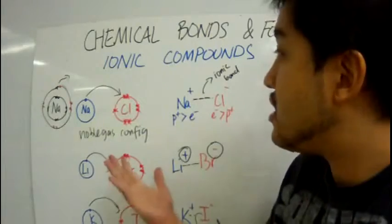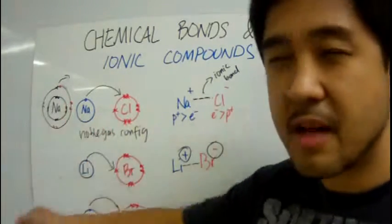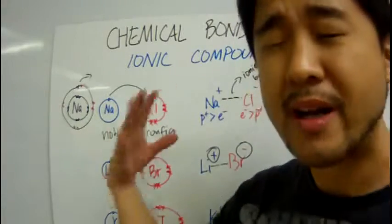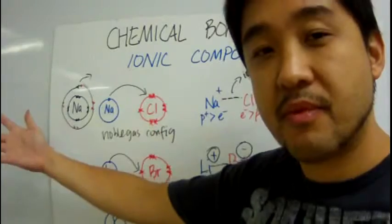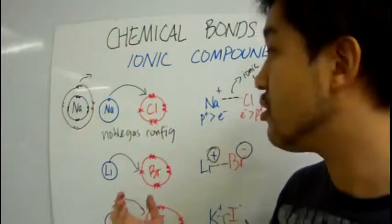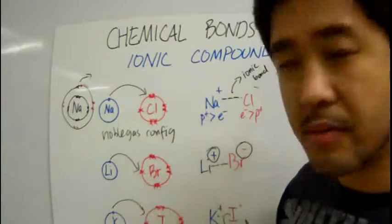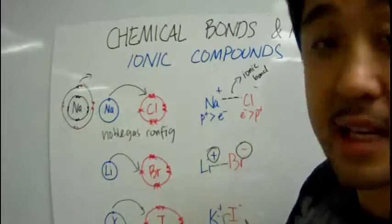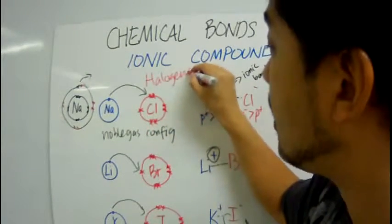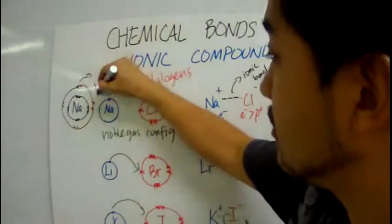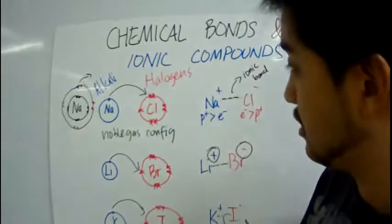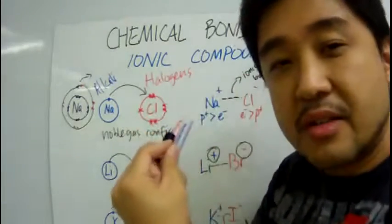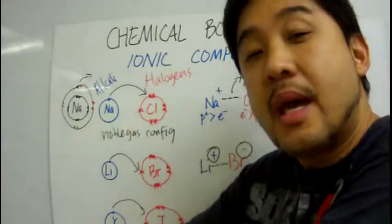What have you noticed about these ionic compounds? Sodium, lithium, and potassium are all Group 1 elements — the alkali metals. Chlorine, bromine, and iodine are Group 7 elements known as the halogens. Next, we're going to talk about the ionic bonds of more complicated metallic and non-metallic elements.